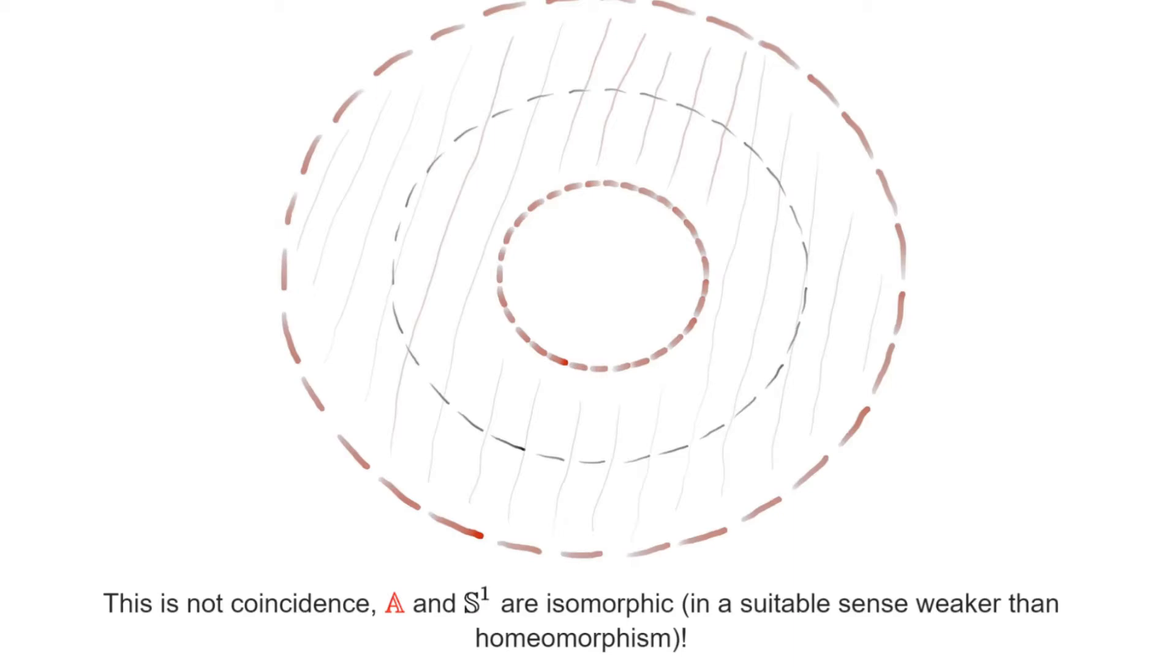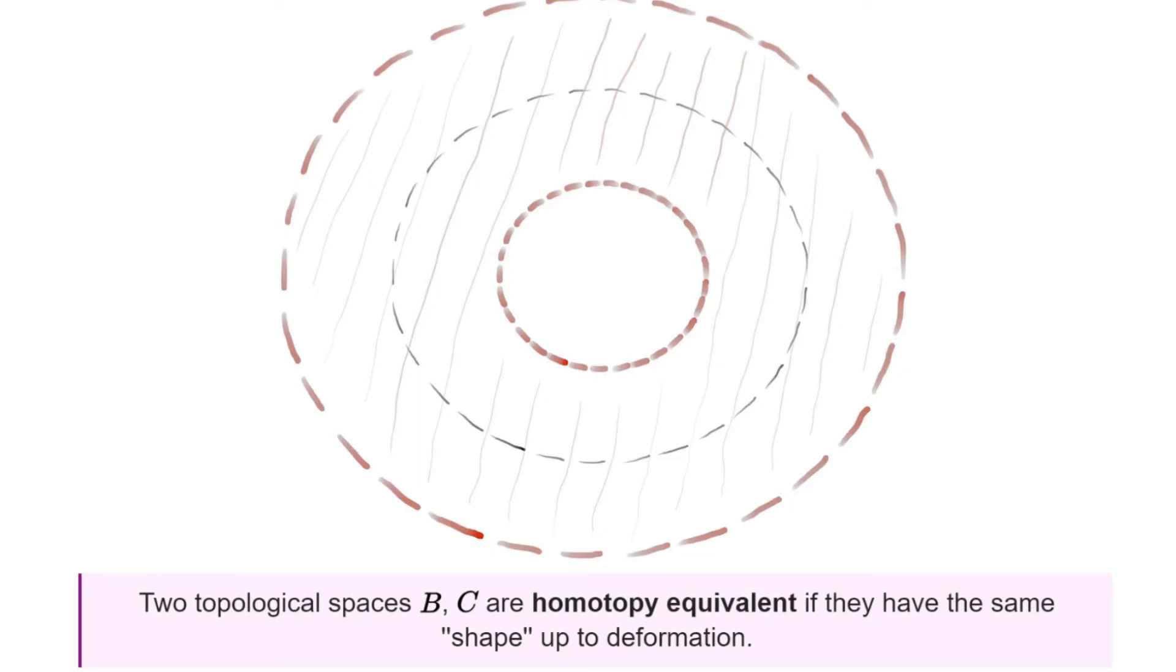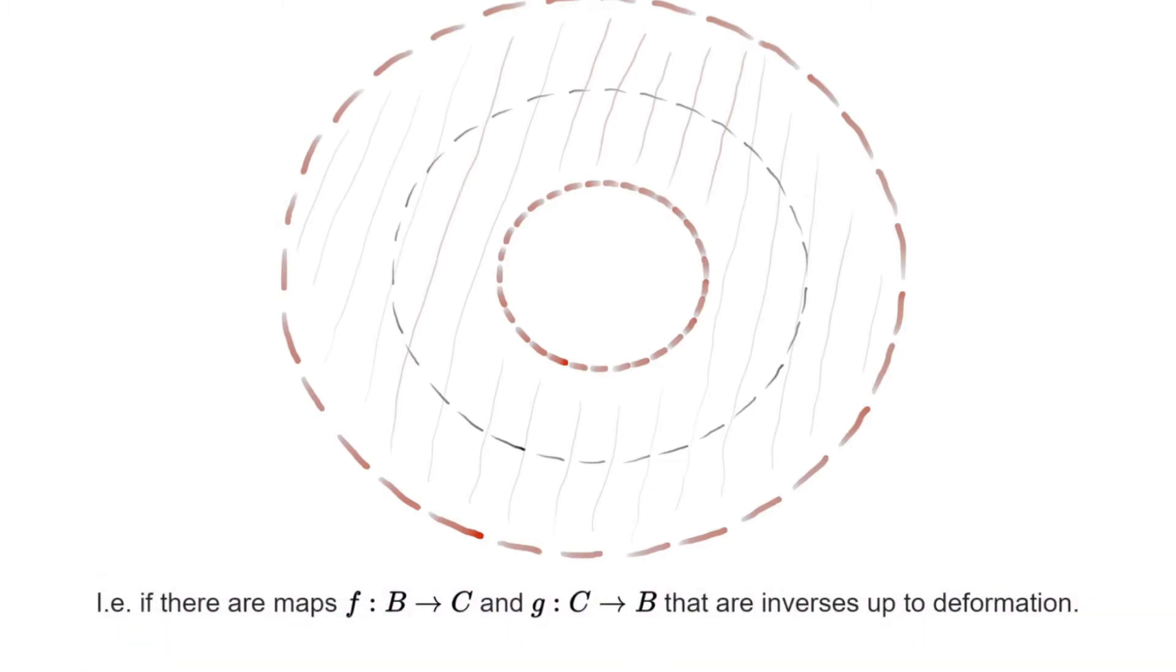The definition that is of interest to us is the following. It says that two topological spaces, B and C, are homotopy equivalent if they have the same shape up to deformation. What this means is that we are able to find a map from B to C and a map from C to B such that they may not be inverses of one another, they may not be homeomorphisms, but at least they are inverses up to deformation.